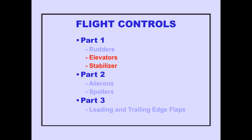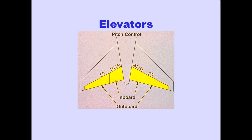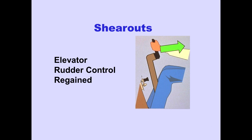Let's now look at the elevators and stabilizer. Inboard and outboard elevators provide pitch control for the airplane. The elevators are powered by all four hydraulic systems. The mechanical system incorporates shear routes, which allow elevator control to be regained if a jam occurs and a significant manual force is applied to the control columns. Elevator feel is provided at the control columns, powered by hydraulic systems 2 and 3. Loss of one hydraulic system has no effect on feel force. If both systems fail, feel forces are provided by mechanical springs.